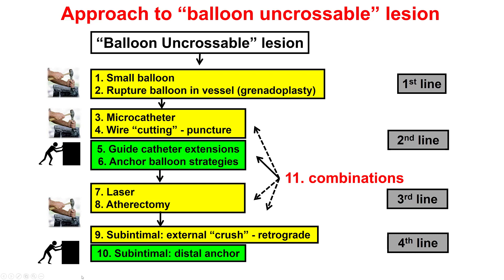Balloon uncrossable lesions can be treated sequentially either by modifying the lesion or obtaining extra support. The first step is to use a small balloon or even rupture the balloon — so-called grenadoplasty. Moving on: different microcatheters, the wire-cutting technique if a second wire can be passed, or getting more support with a guide extension or anchor balloon. If this doesn't work, go to the third line: laser or atherectomy. Finally, if nothing works, the fourth line is subintimal crossing techniques to crush through the uncrossable segment.